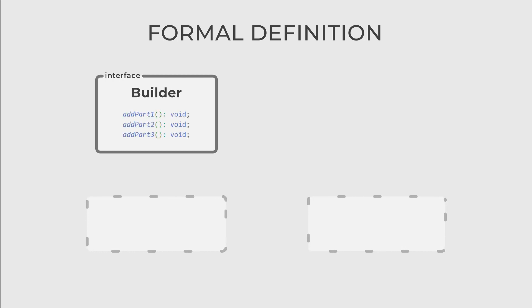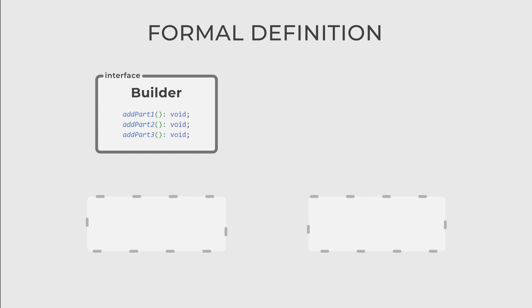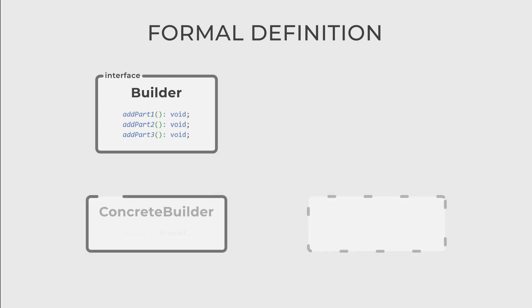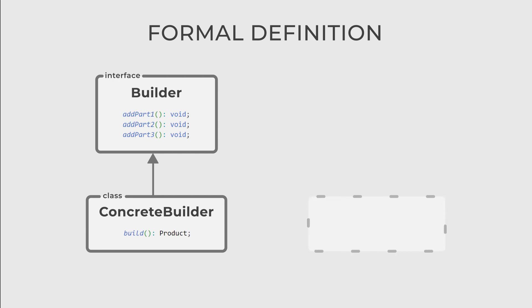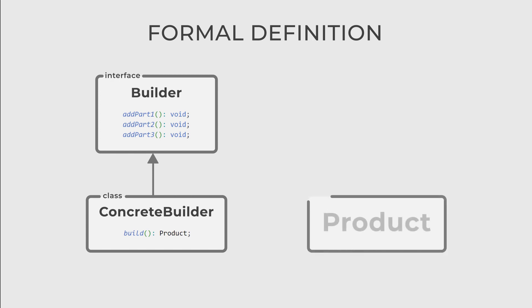There are three actors in this design pattern. The first is Builder, which is an interface that declares methods for building the various parts of a complex object. Then, Concrete Builder — a subclass of builder that implements methods for building individual parts of a complex object. The last actor is the Product, which is a complex object being constructed, typically composed of multiple parts.